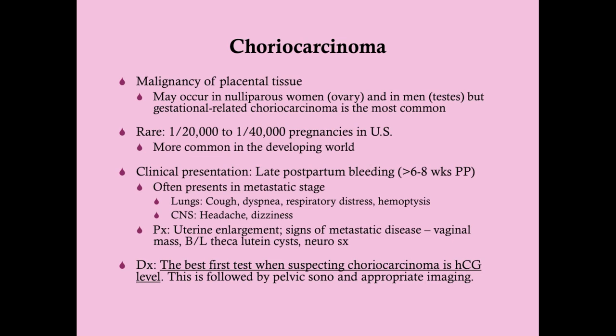Because choriocarcinoma has syncytiotrophoblastic cells, it produces HCG. This will be associated with a high HCG and hence can cause bilateral theca lutein cysts, which you may see on sonography. You may also note neurologic signs such as papilledema on physical examination. To diagnose this, the best first test when you suspect it is an HCG level, which you should already be getting if you're following a woman up after D&C with benign gestational trophoblastic disease. You may note the plateau or peaking of the HCG level.